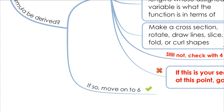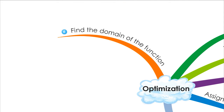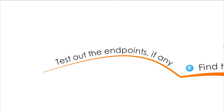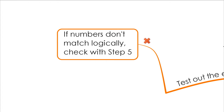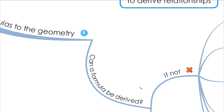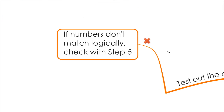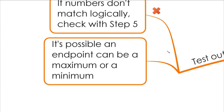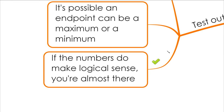Once you have that, you can move on to step six: finding the domain of the function. This is important because you want to test the endpoints to check if the function works. If the numbers don't match logically, you'll have to go back to step five to check the formula — it might be the formula used or the way it was derived. Also note that an endpoint can itself be a maximum or minimum, so be careful. If the numbers make logical sense, the hardest part — deriving the formula — is done.